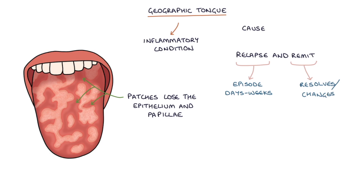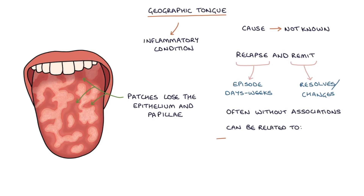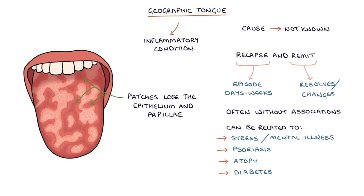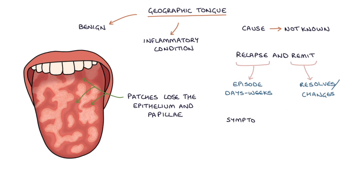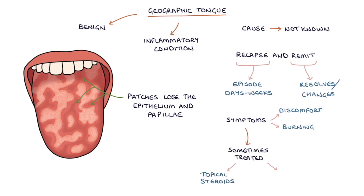The cause of these changes is not known. Geographic tongue often occurs without any associations; however it can be related to stress or mental illness, psoriasis, atopy — for example asthma, hay fever and eczema — or diabetes. Geographic tongue is a benign condition and does not cause any harmful effects. It does not usually require any treatment, though symptoms such as discomfort or burning are sometimes treated with topical steroids or antihistamines.